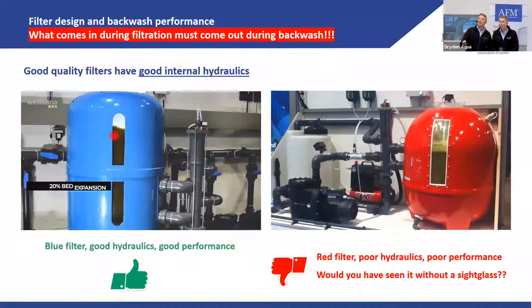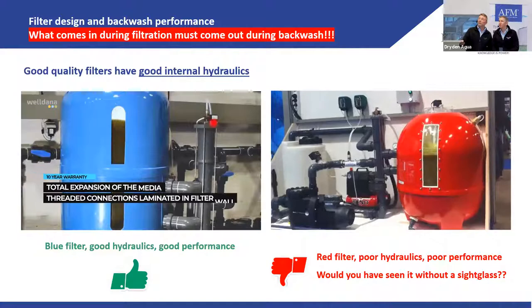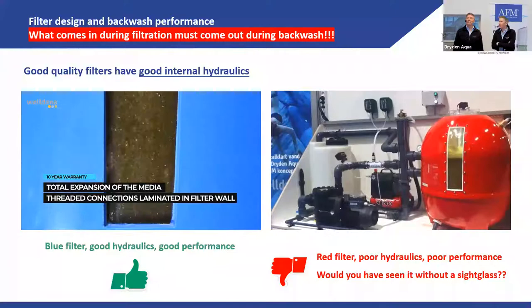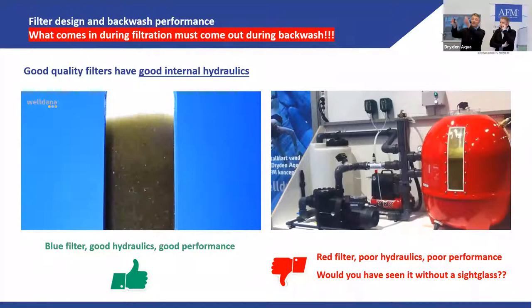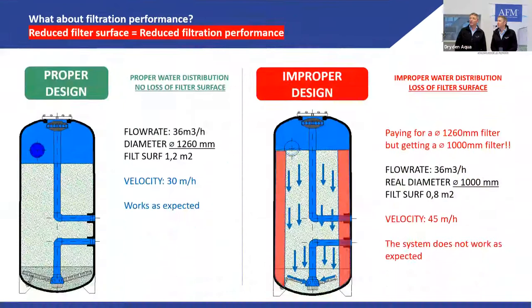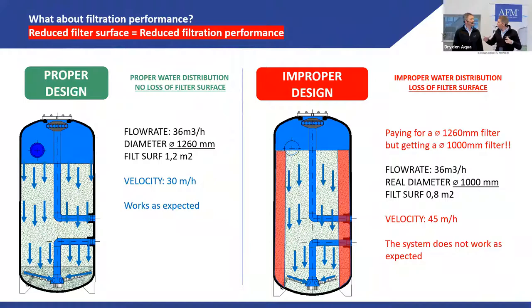A side glass shows whether you have full bed expansion over the entire diameter. These were 600 mm filters with the same pump and Besgo valve. The dead zones in a poorly designed filter reduce the effective filtration surface area. For example, if you lose 10 cm on each side of a 1.2 m filter, the effective surface drops from 1.2 m² to 0.8 m², meaning filtration velocity jumps from 30 to 45 m/hr — a huge difference.